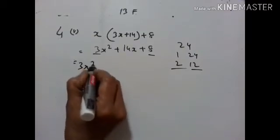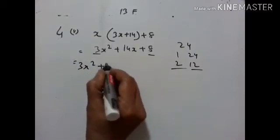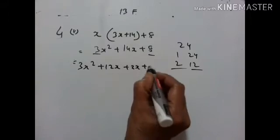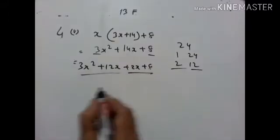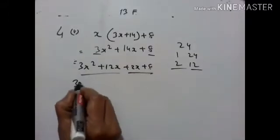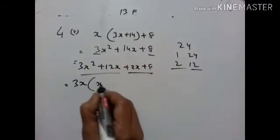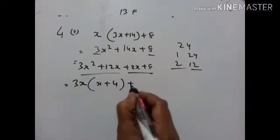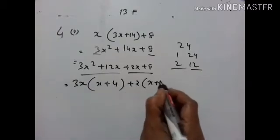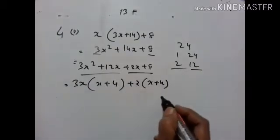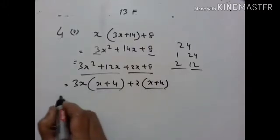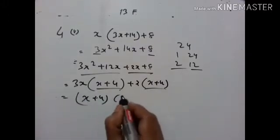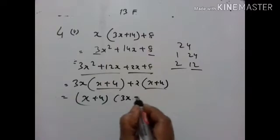So we write 3X² plus 12X plus 2X plus 8. Here 3X is common, giving X plus 4. Now X plus 4 is common.